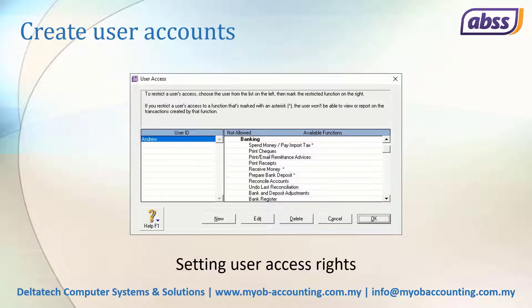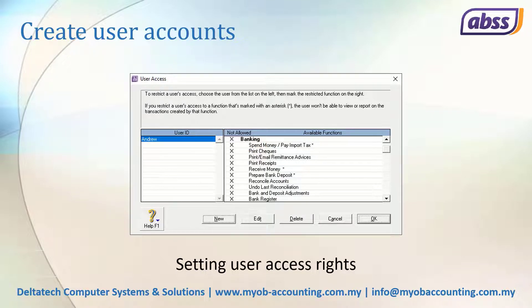By default, a new user will be able to access all the features that an ordinary user has rights to. You can restrict a user's access by entire modules, or by selected functions within a module. For example, to restrict access to the banking module, first select the user, then in the section on the right, click Not Allowed against the module name. An X will appear against all the functions related to banking.